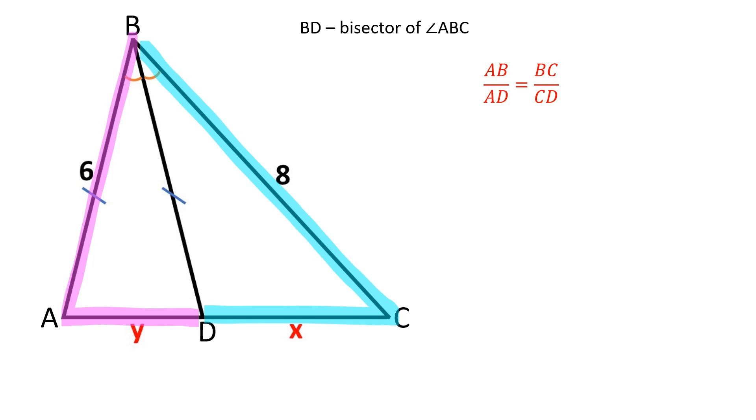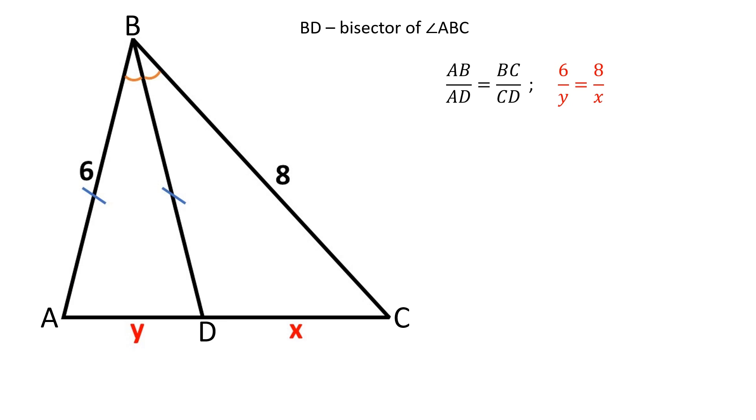AB over AD is equal to BC over CD. If you are not familiar with this formula, please check my video with the proof of this formula in the description below. Let's substitute in the values.